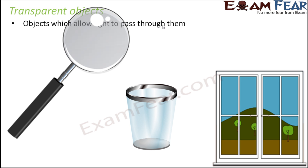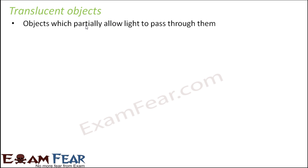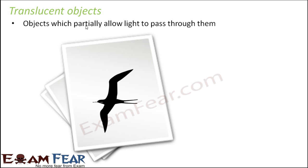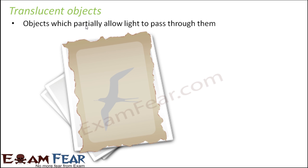A magnifying glass is also transparent, which is why you can see through it. Translucent objects partially allow light to pass through them — not completely, but to some extent. That is why we cannot see objects clearly through translucent materials. For example, if a bird is drawn on a white sheet of paper and we place a translucent film over it, we can still see the bird but it becomes unclear.